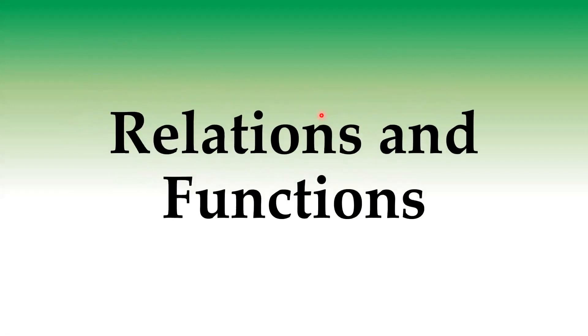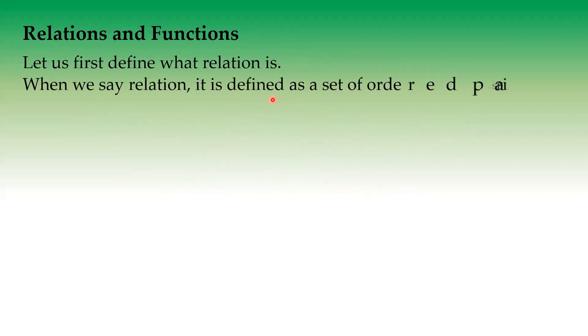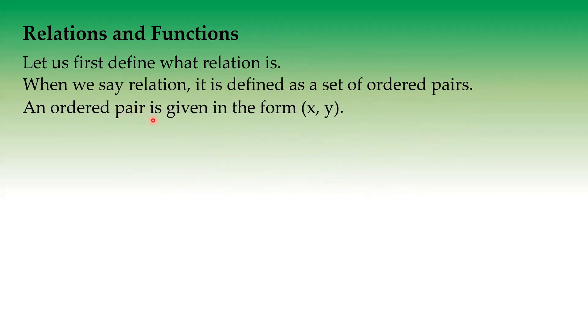We have relations and functions. So let's start. First, we're going to define what a relation is. When we see relation, it is defined as a set of ordered pairs. And an ordered pair is given in the form (x, y). So we have x, y for our ordered pair.